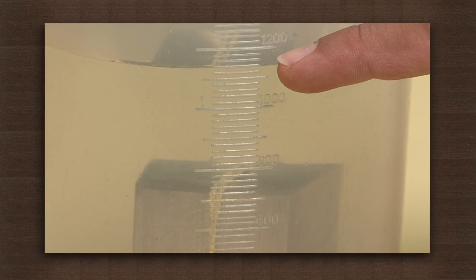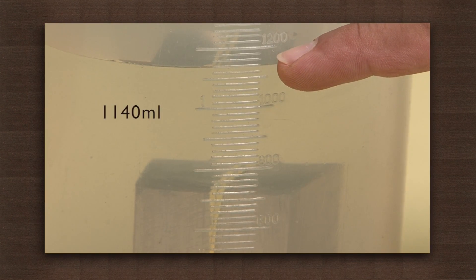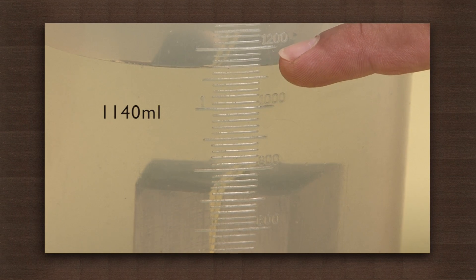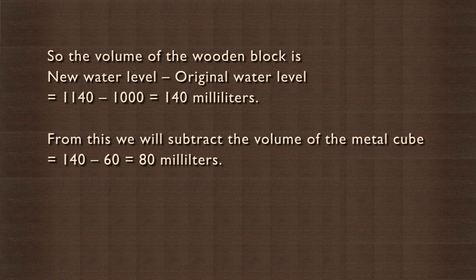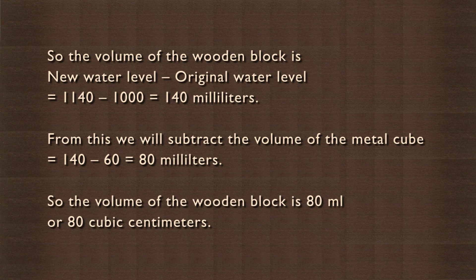Observe the rise in water level — it reads 1140 milliliters. So, the volume of the wooden block is the new water level minus the original water level, which is 1140 minus 1000, equaling 140 milliliters. From this, we subtract the volume of the metal cube: 140 minus 60 equals 80 milliliters. So, the volume of the wooden block is 80 ml or 80 cubic centimeters.